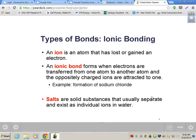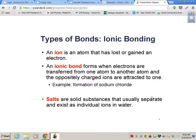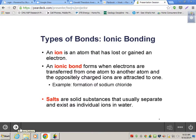An ion is an atom that has lost or gained an electron. And you were looking at some ions today in your activity — like hydroxide, hydronium ions, and hydrogen ions. Now, an ionic bond forms when electrons are transferred from one atom to another, and the oppositely charged ions are attracted to one another. An example of that is sodium chloride. Salts are solid substances that usually separate and exist as individual ions in water. A salt is basically an acid and a base put together with water removed, essentially.